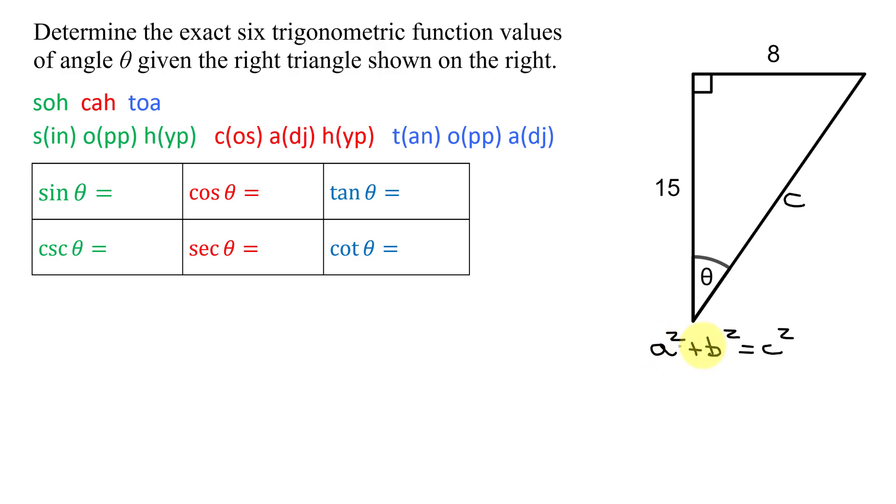It doesn't matter which one of these I call A and B. So I'm going to have 15 squared plus 8 squared equals C squared.